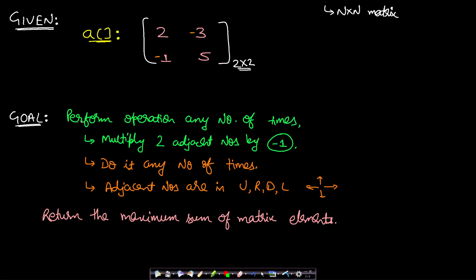Our goal is: given an n by n matrix, perform the operation any number of times. The operation is to multiply two adjacent numbers by minus 1, and adjacency goes in four directions — up, right, down, or left. So if you choose this -1, you can choose -1 and 5, or -1 with 2. On the left side and down side there are no elements.